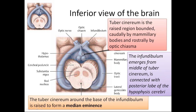The tuber cinereum is the raised region bounded caudally by the mammillary bodies and rostrally by the optic chiasma. The infundibulum emerges from the middle of the tuber cinereum and is connected to the posterior lobe of the hypophysis. The elevation around the base of the infundibulum in the tuber cinereum is called the median eminence.